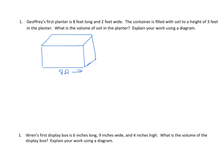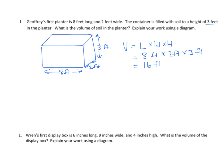We know that it is 8 feet long, 2 feet wide, and 3 feet tall. This is pretty basic — we have a rectangular prism and we need to find the volume. That's equal to the length times the width times the height. We'll substitute our values: length is 8 feet, width is 2 feet, height is 3 feet. We find the product: 8 times 2 is 16 feet squared, times 3 feet, equals 48 cubic feet.